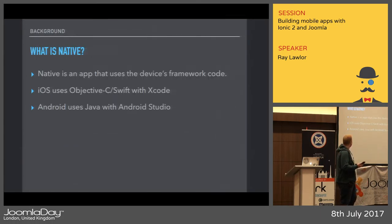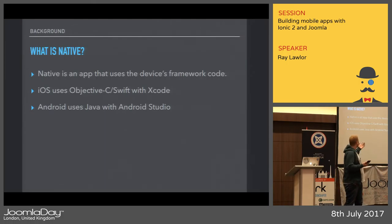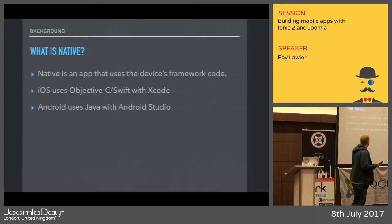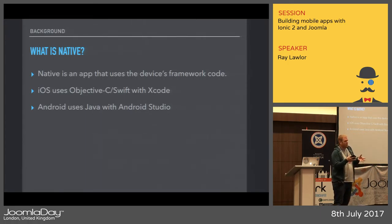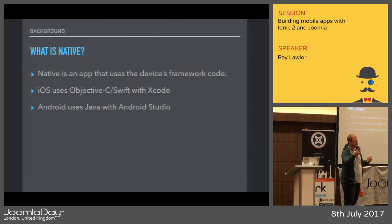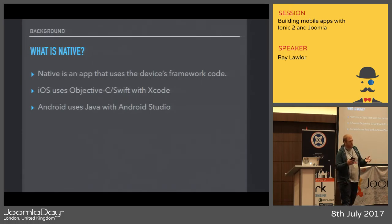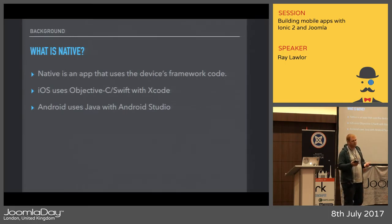What is native? Native is an app that uses the device's platform code. On iOS it's Objective-C and Swift with Xcode, and Android uses Java and Android Studio. These apps are built inside their own platforms. If you want to build an iOS app you have to download Xcode, which is Mac-specific, and use Objective-C and Swift. There is very little relationship between that codebase and what we'd be used to as web developers.